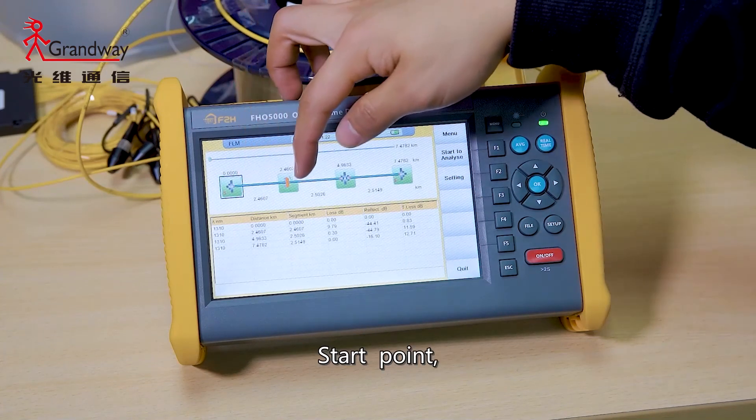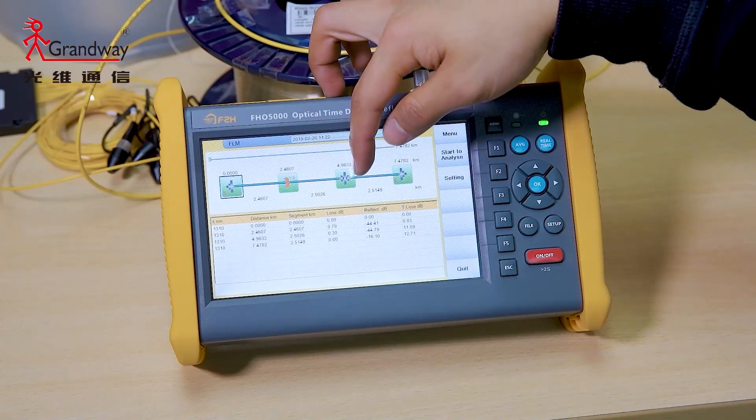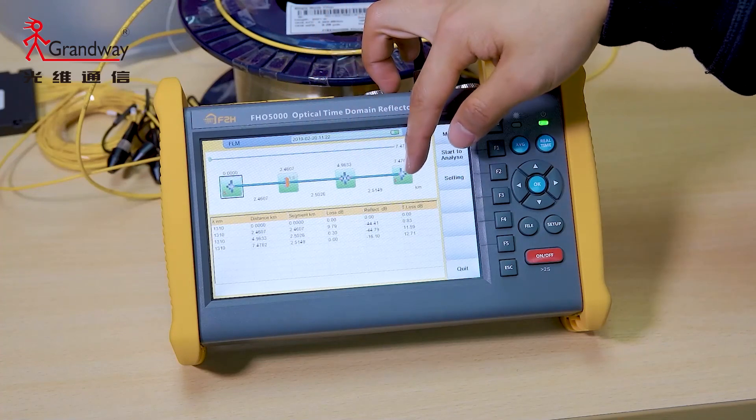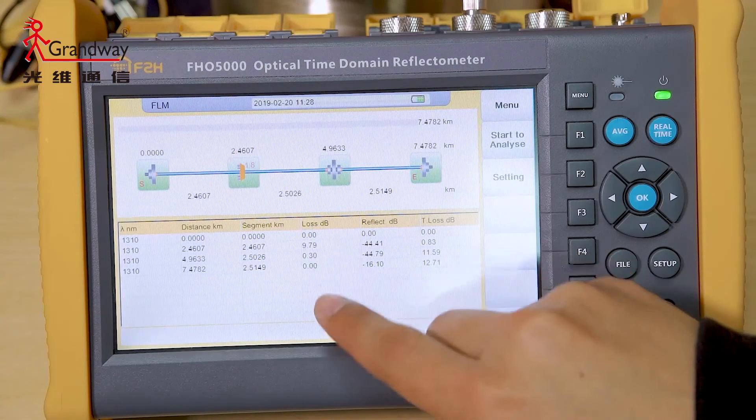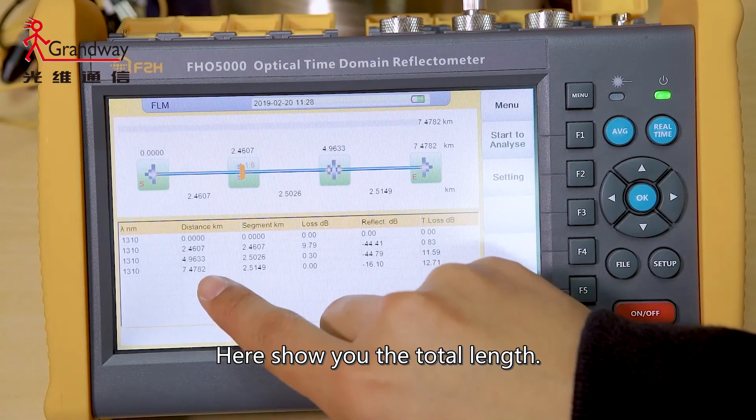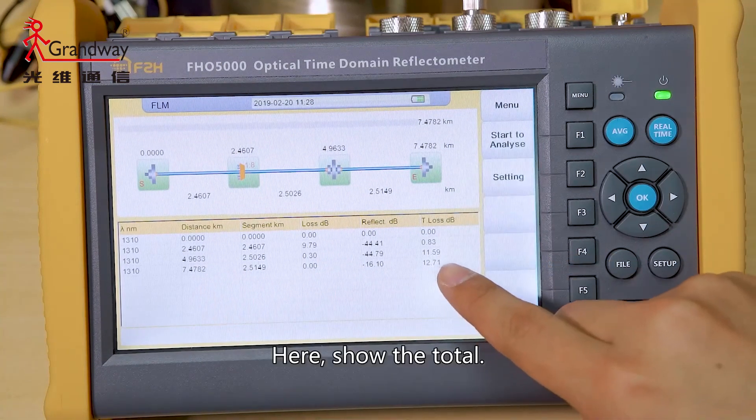Start point, splitter, connector, and end point. Here, show you the loss of every event. Here, show you the total length.